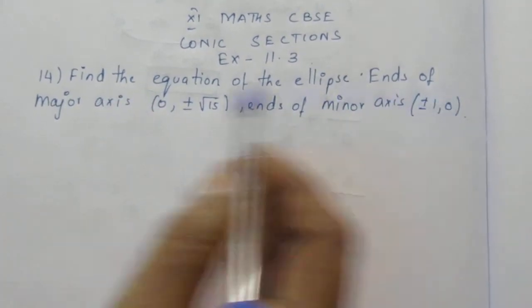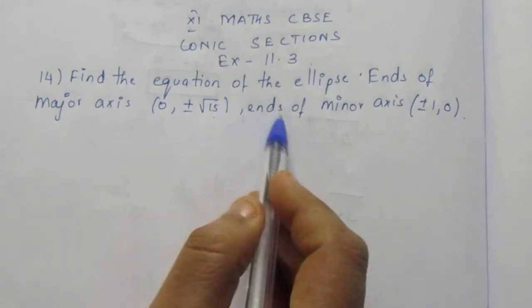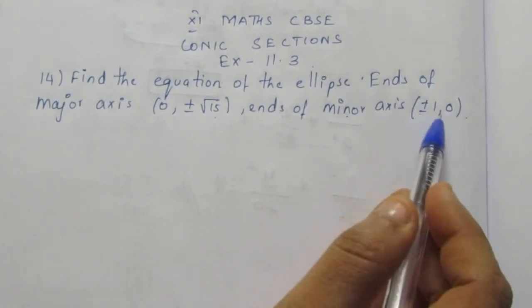Find the equation of the ellipse. Ends of the major axis are (0, ±√15). Ends of the minor axis are (±1, 0).